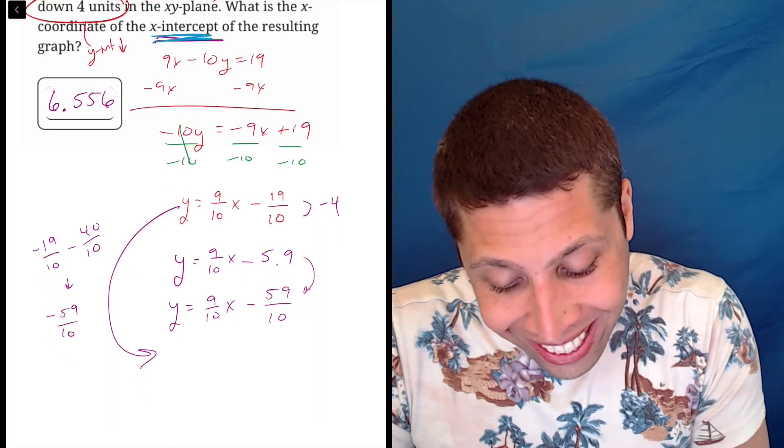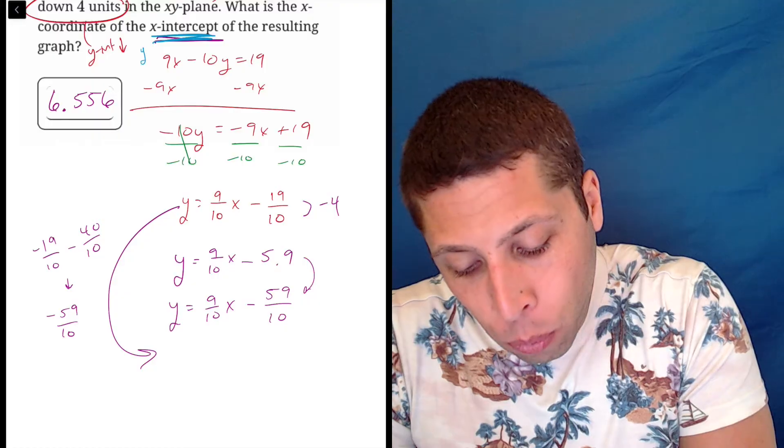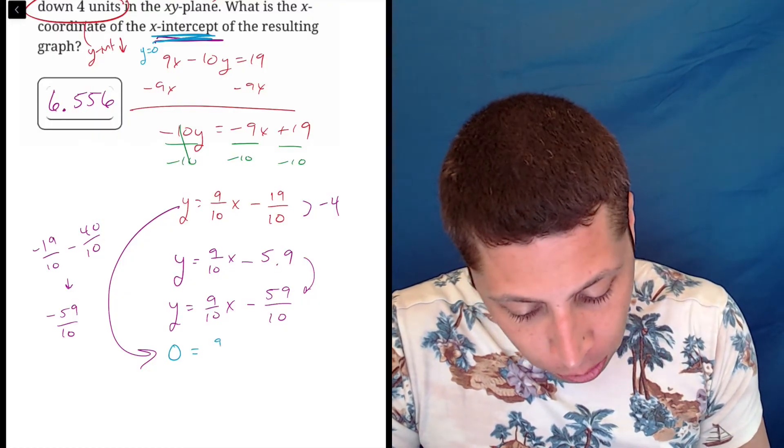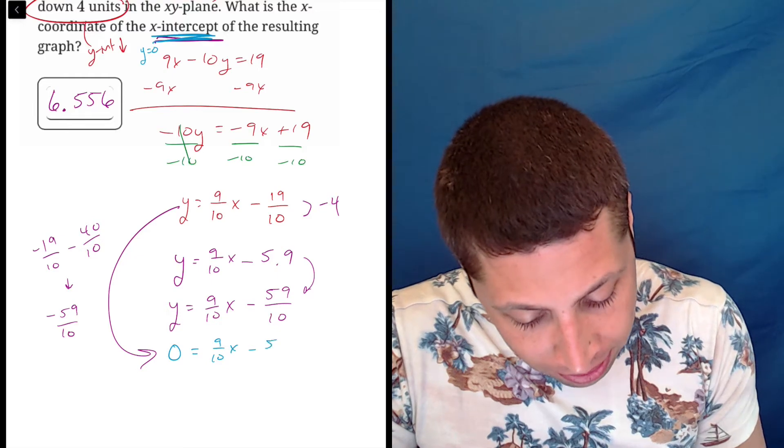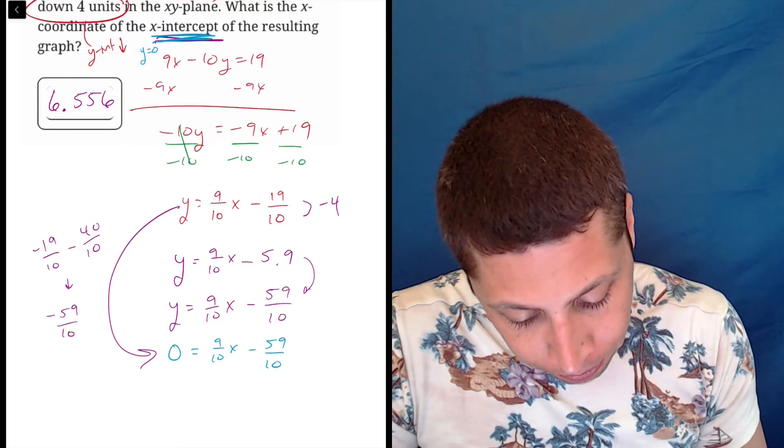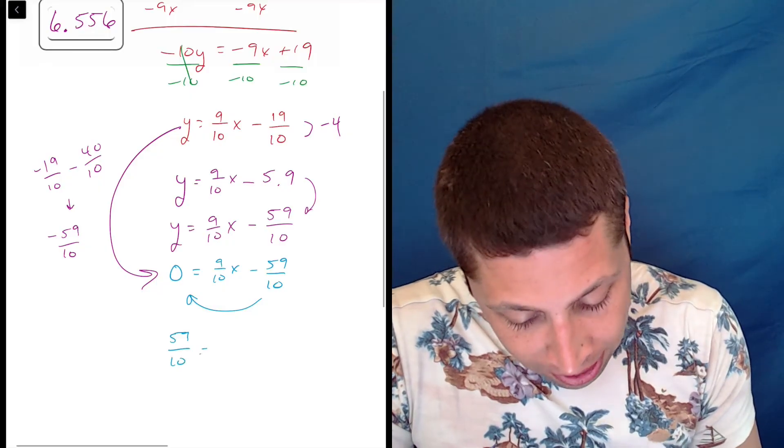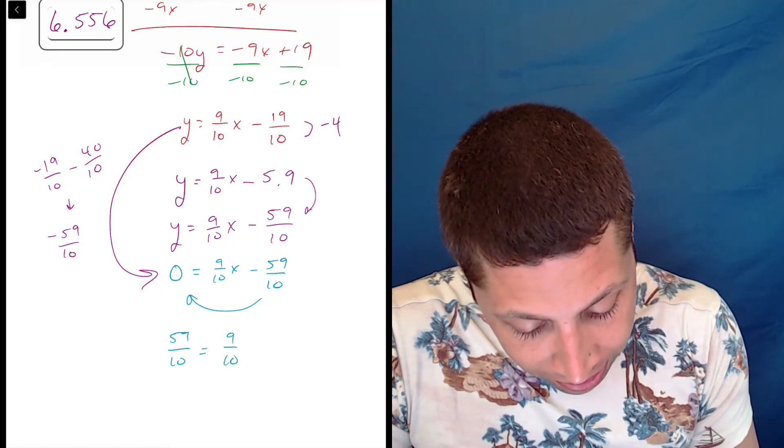Then, because they're asking for an X intercept, I know that my Y coordinate is equal to 0. So let's plug that in. 0 is equal to 9 tenths X minus 59 tenths. Let's add this over to the side. So that's 59 tenths equals 9 tenths X.